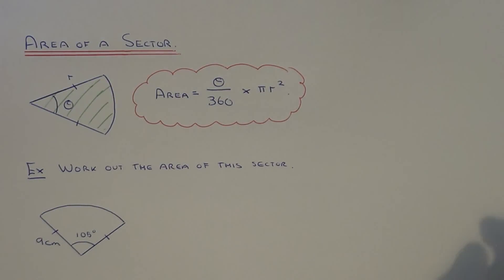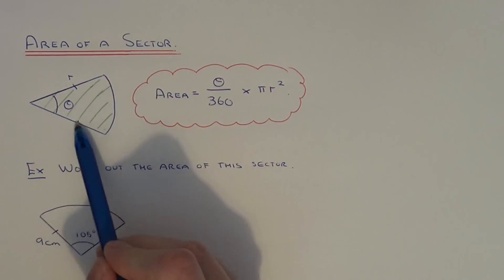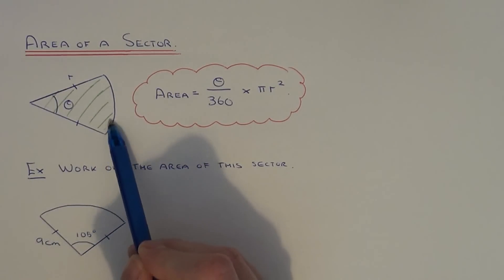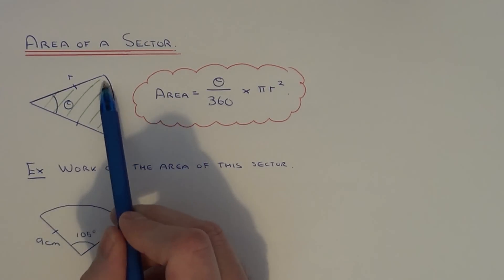Today I am going to show you how to work out the area of a sector. So a sector is a fraction of a whole circle. We are working out the space enclosed between the arc and the two radiuses.